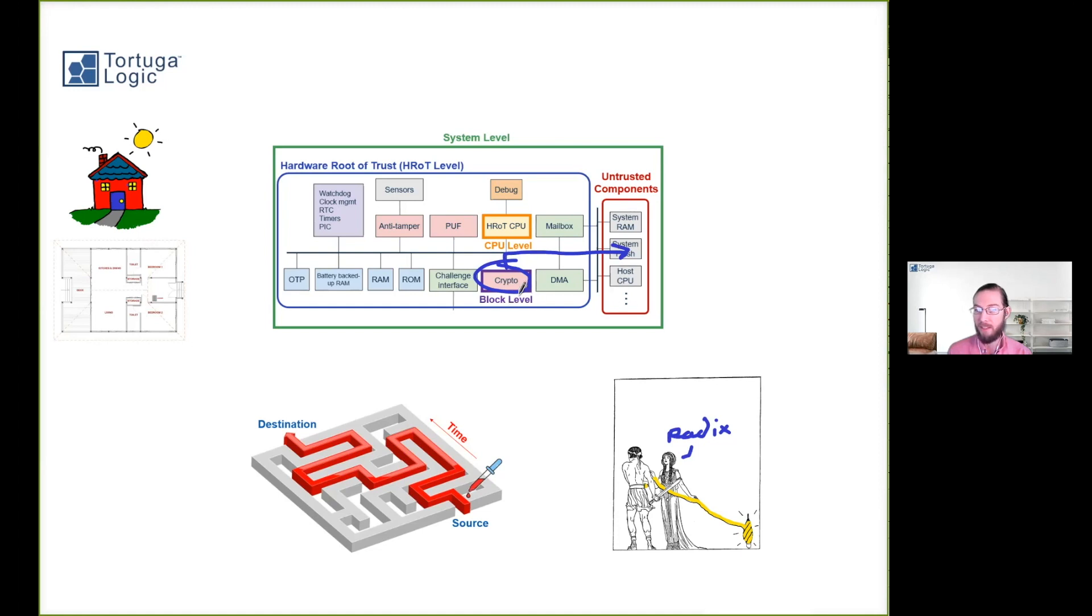When you integrate a root of trust with some untrusted system components, you really want to make sure that, first of all, these things can't leave, but also things can't get in and corrupt the integrity of security critical assets. So this is like a home in that we have valuables inside. We don't want people to break in and take those things.